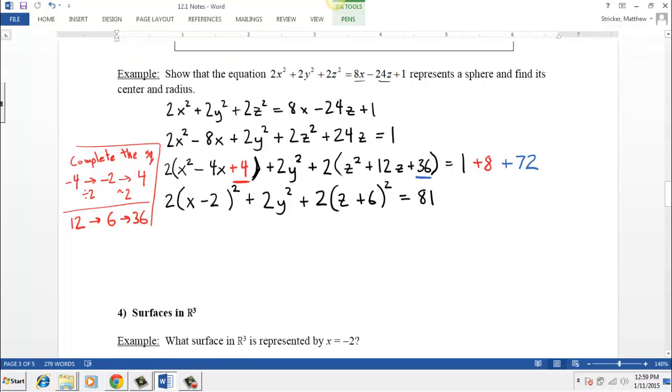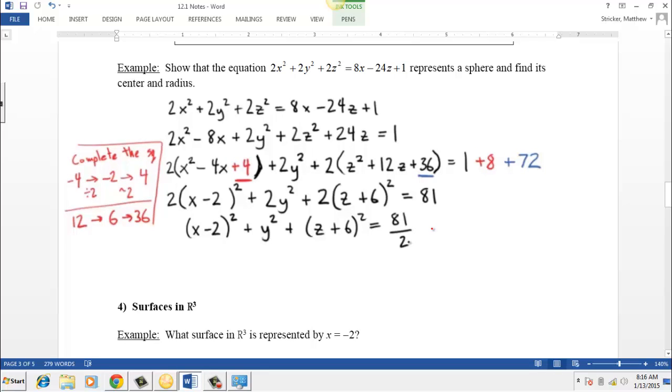So when I divide everything by 2, that's going to give me x minus 2 squared plus y squared plus z plus 6 squared equals 81 over 2. So it just kind of makes our radius ugly, but if you look at the form of a sphere that we calculated above, this is obviously in that form.